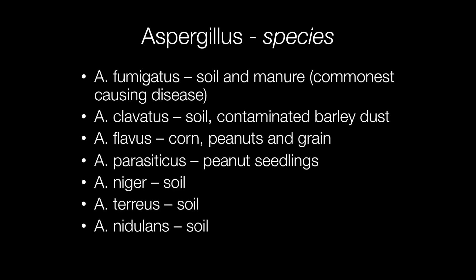There are many species of Aspergillus. The one most frequently associated with disease is Aspergillus fumigatus, found in soil and manure. Other species include Aspergillus clavatus, found in soil and contaminated barley dust, and Aspergillus flavus, found in corn, peanuts, and grain.